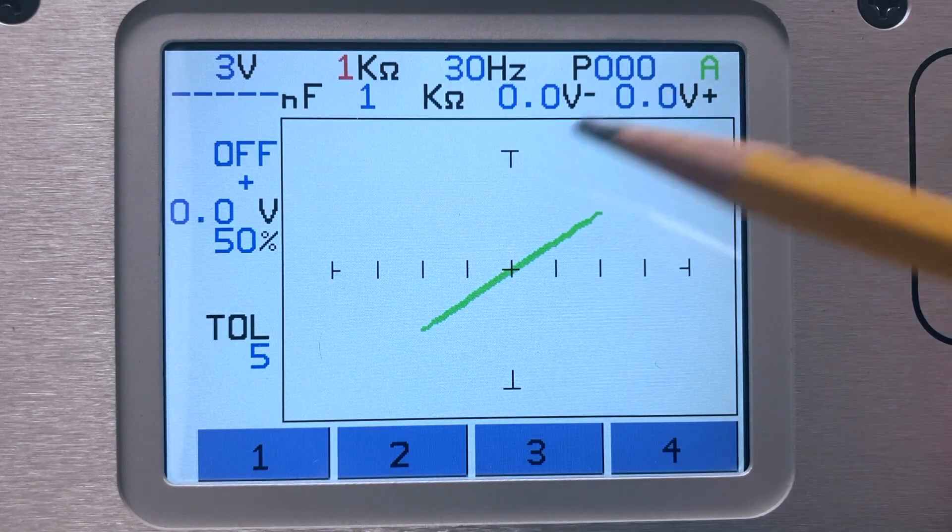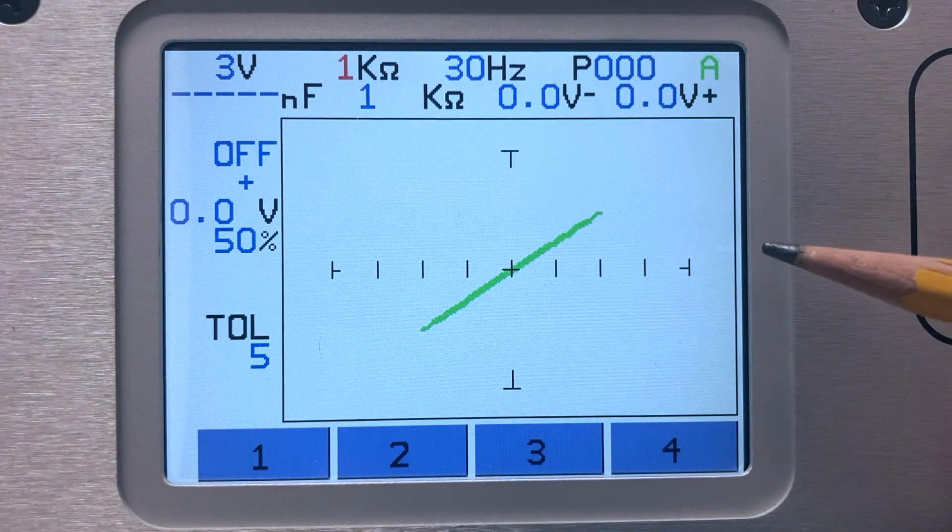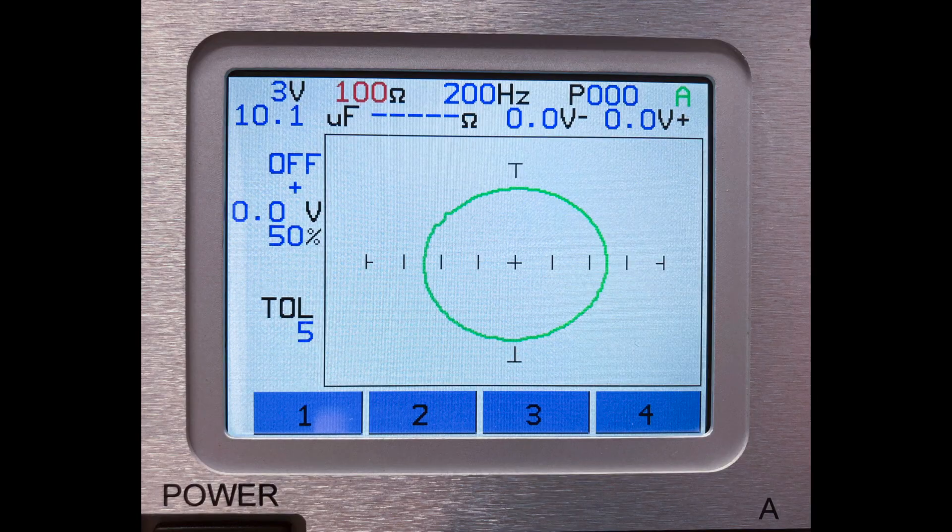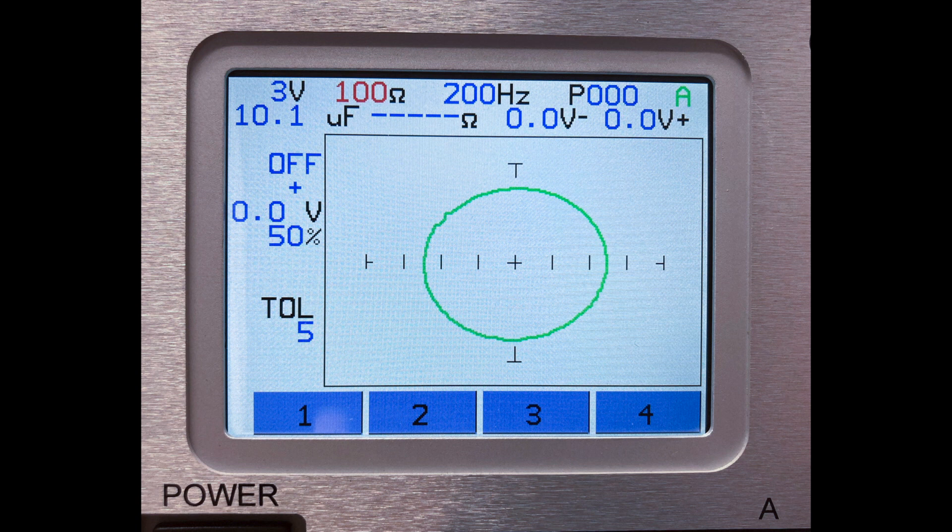When testing resistance, the idea was to achieve an equal amount of horizontal and vertical deflection in the analog signature. This concept holds true for capacitive signatures as well.